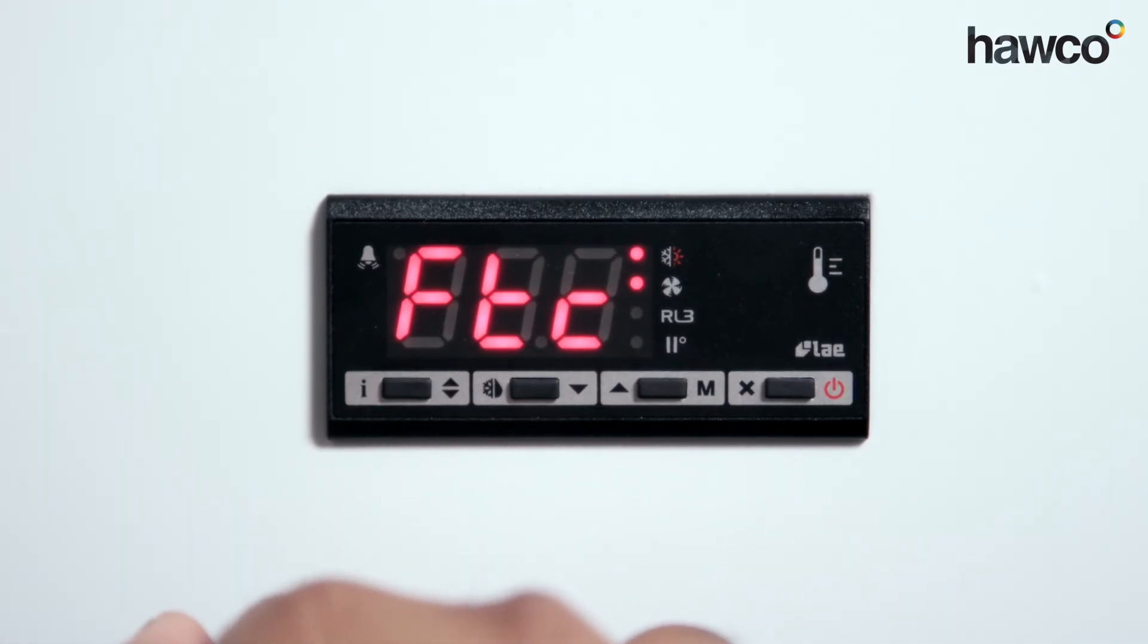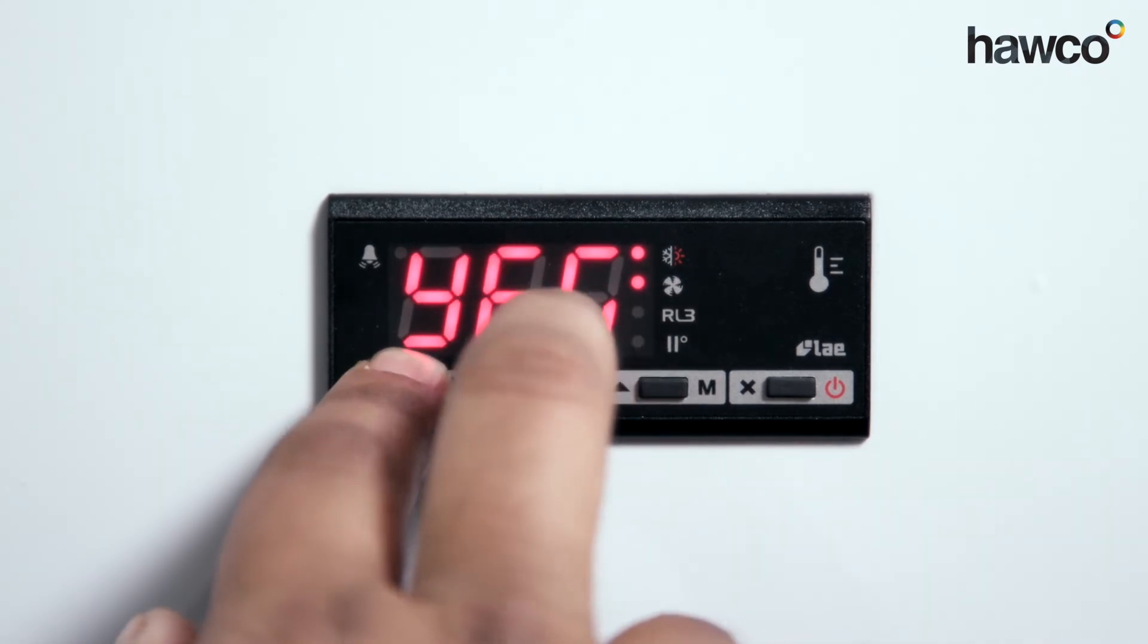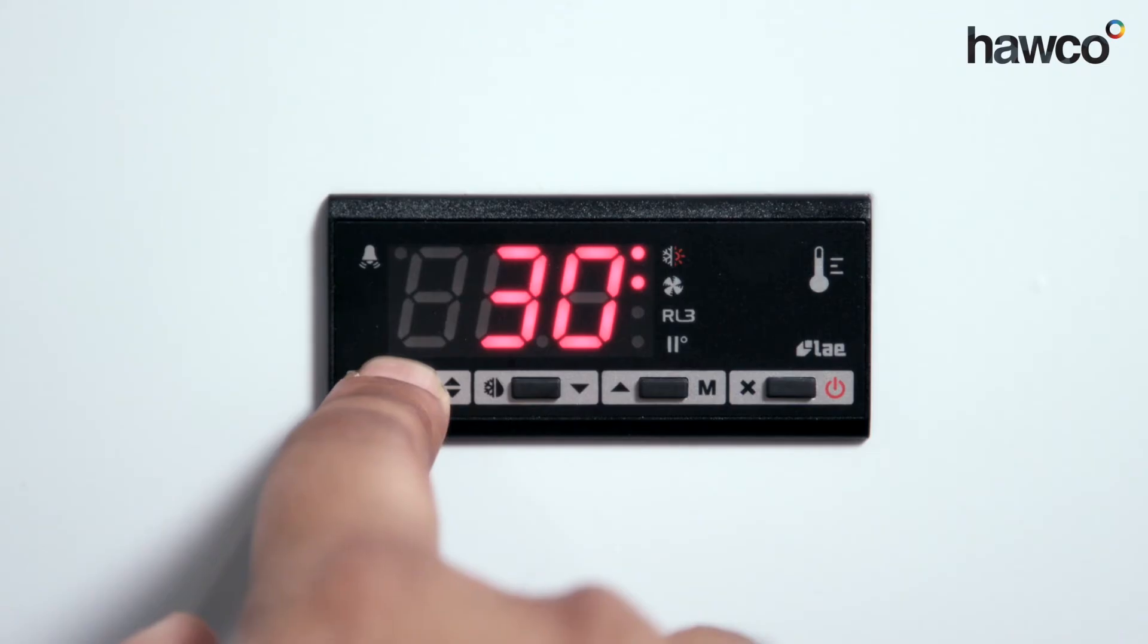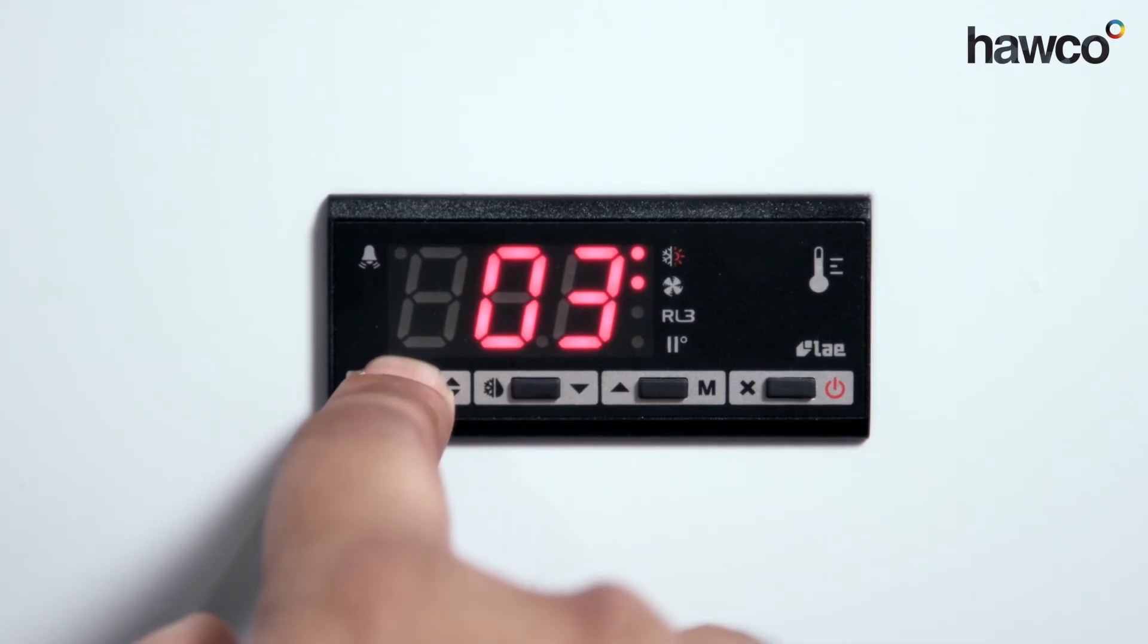FTC is evaporator fan time control, no or yes. On this one, we're going to set it to no. FT1 is fan stop delay at 30 minutes. FT2 is time fan stop at 3 minutes. FT3 is timed fan run at 1 minute.